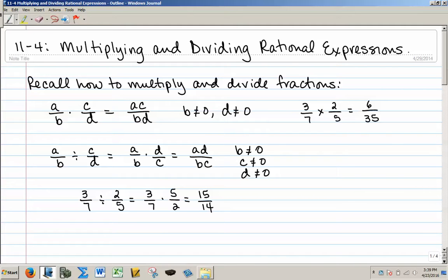Here's an example with real numbers. 3 sevenths divided by 2 fifths is equal to 3 sevenths times 5 over 2. Multiply across the top for 15, and across the bottom for 14.